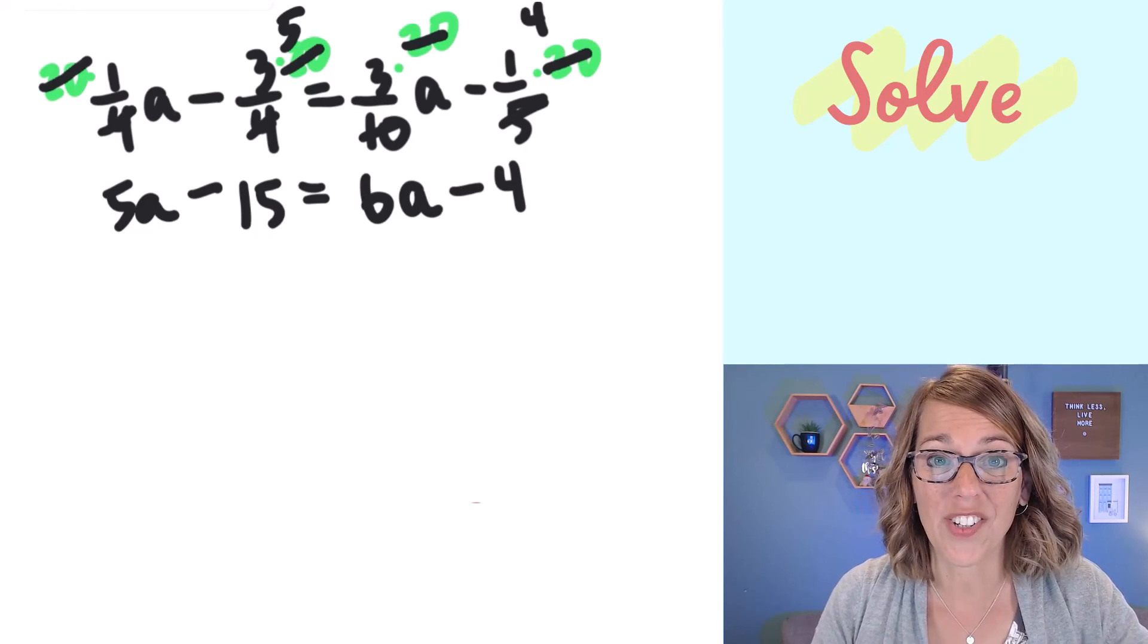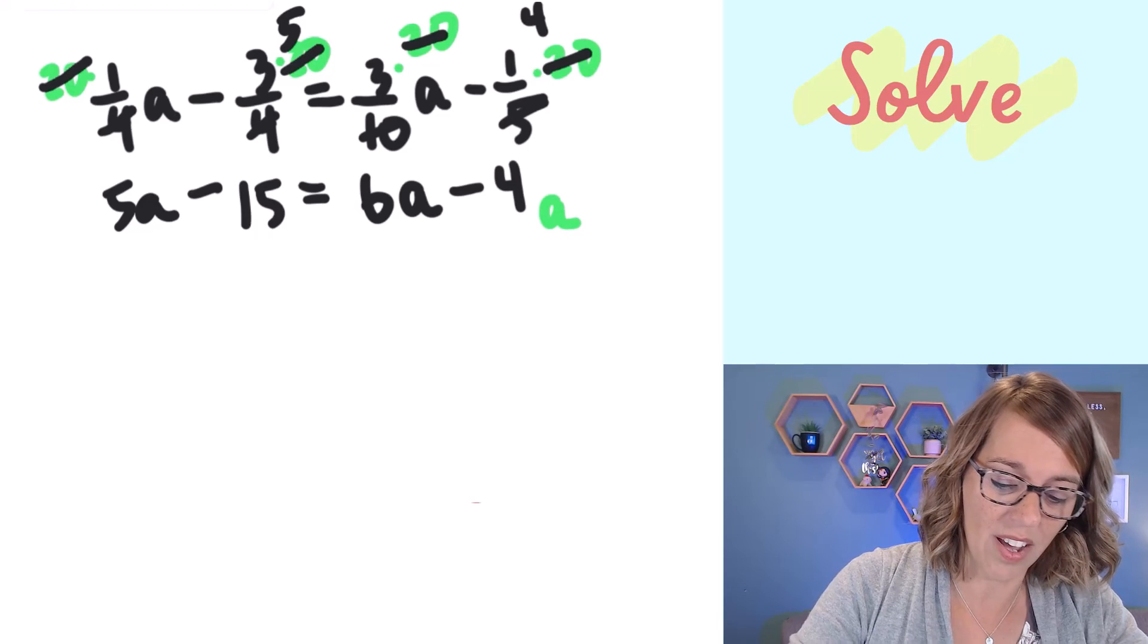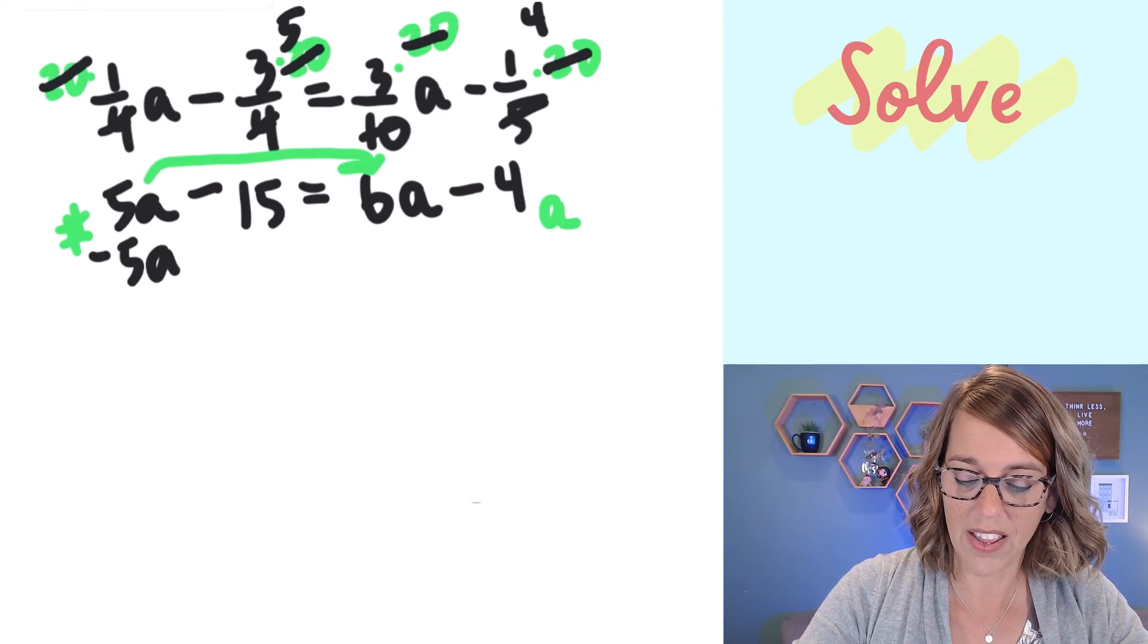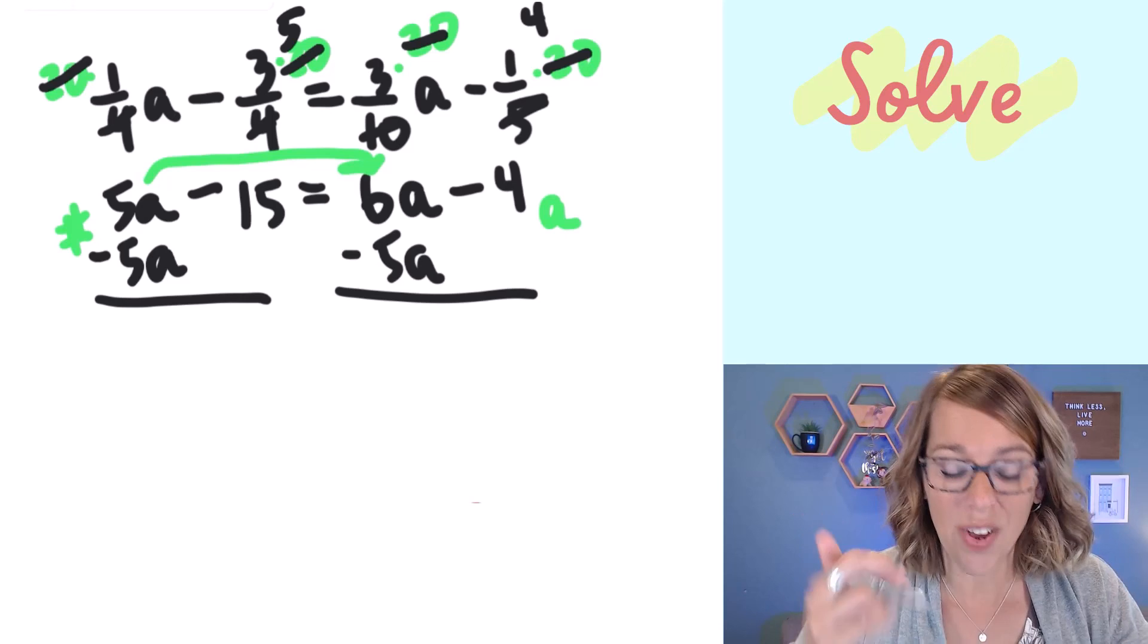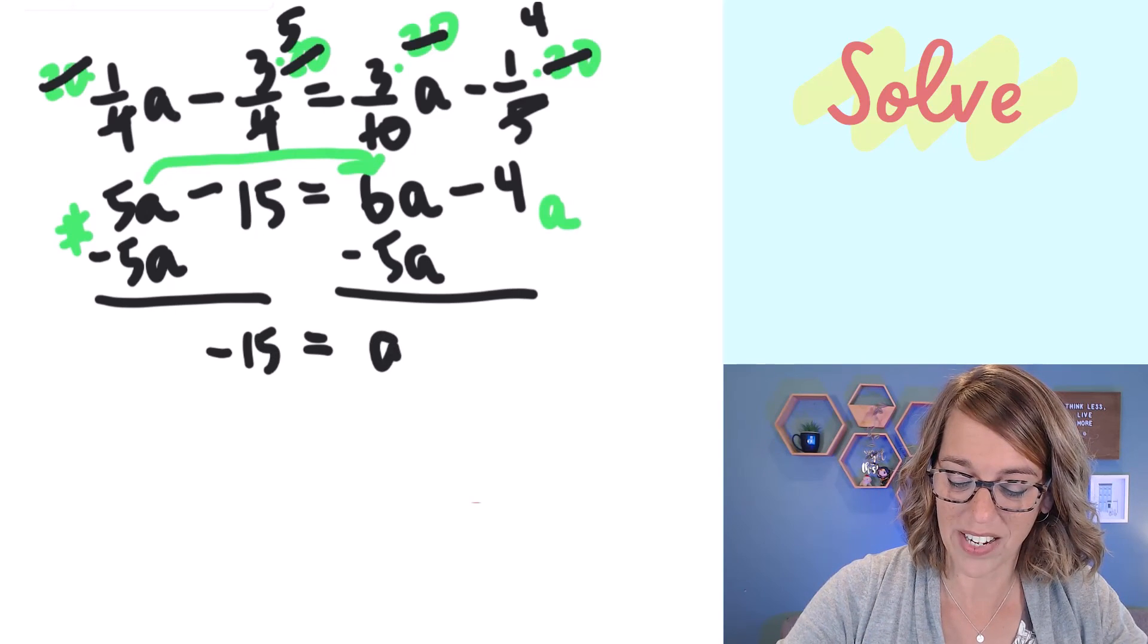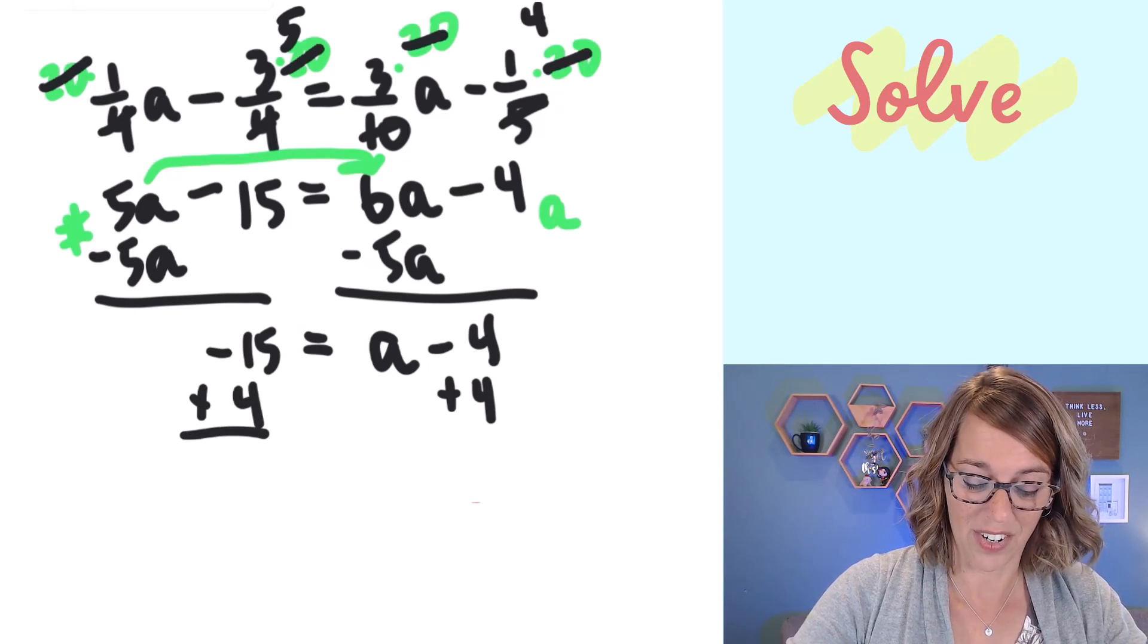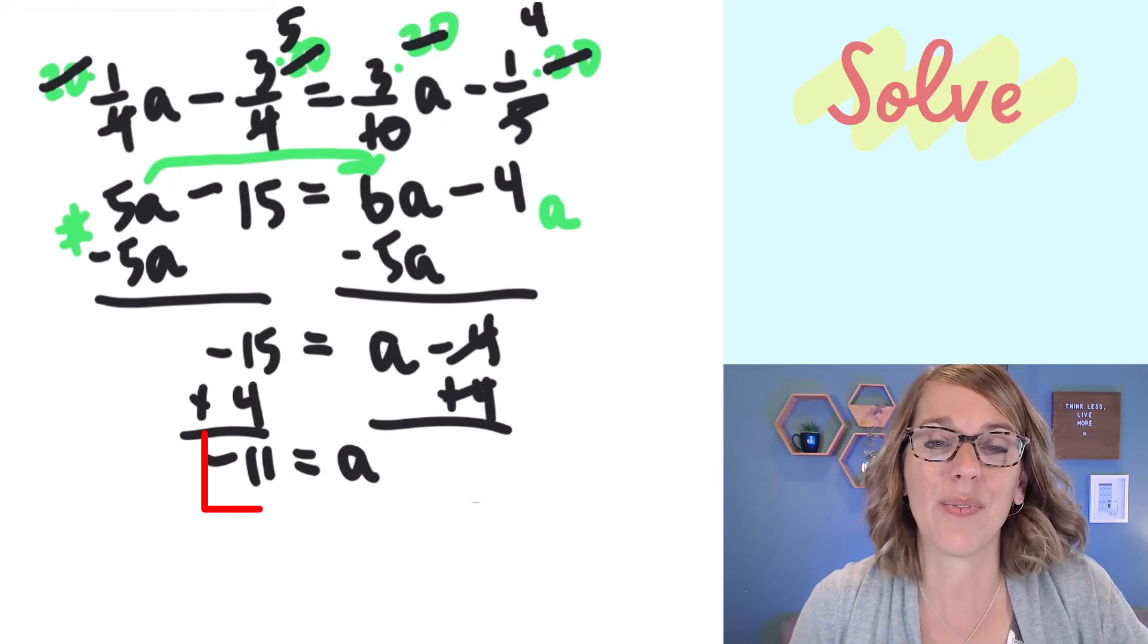Now we're ready to solve this much simpler equation and I'm going to have my variable terms on the right hand side and numbers on the left. I'm going to start by moving that 5a so I need to subtract 5a from both sides. The 5a's go away and I've got negative 15 is equal to 6 minus 5 is 1, so it's equal to 1a minus 4. My very last step is to add 4 on both sides. Negative 15 plus 4 is negative 11 and on the other side our 4s cancel and negative 11 is equal to a.